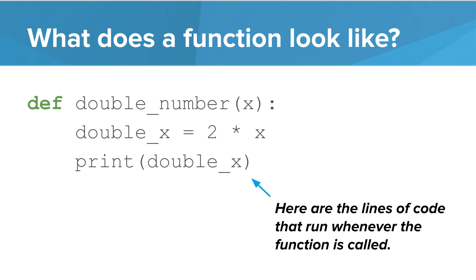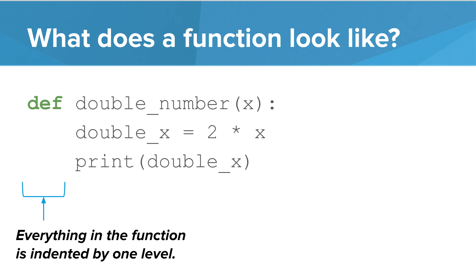From this point on, every time you say double_number and pass it a number in your code, what you mean to do is take that number, double it, and print it out. And of course, everything in a function body must be indented by one level.